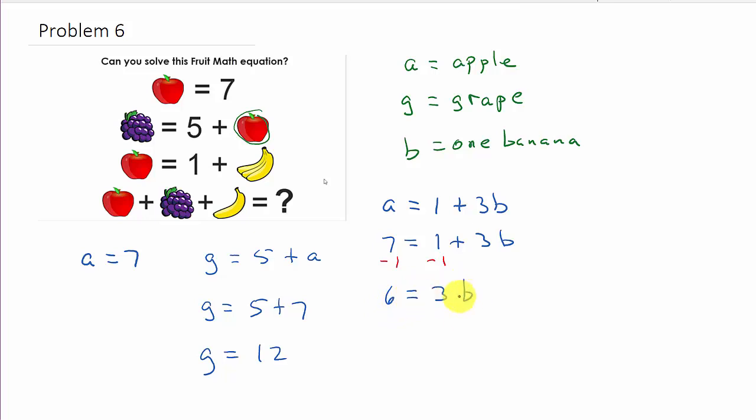And then, to get rid of the 3, we need to divide everything by 3. And so, that is going to give us B is equal to 2.